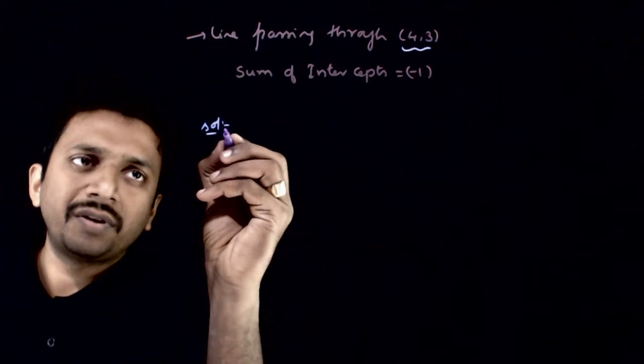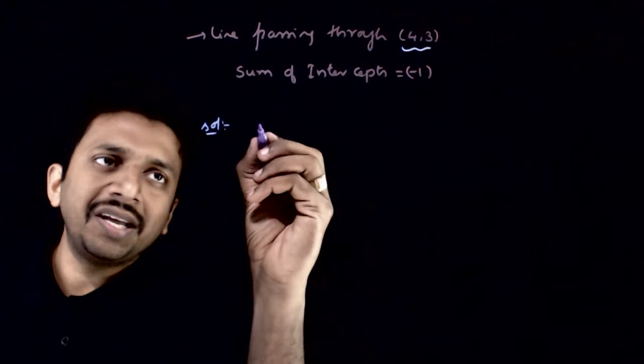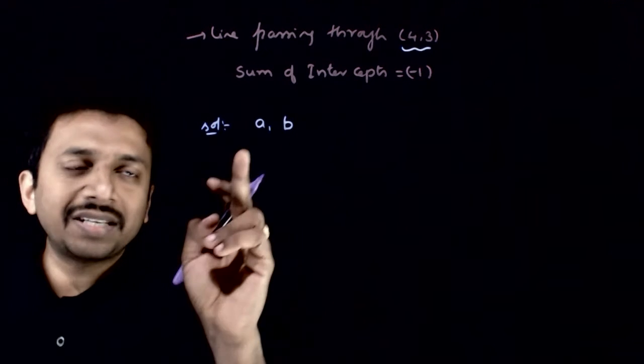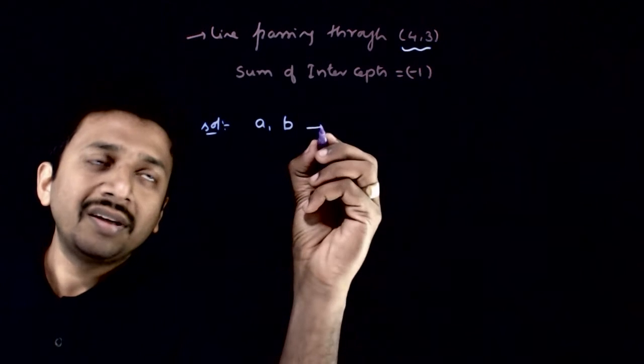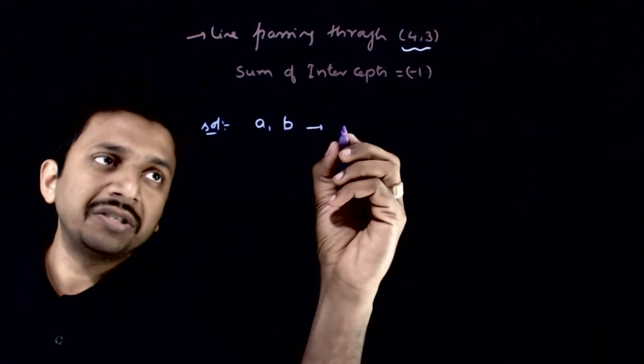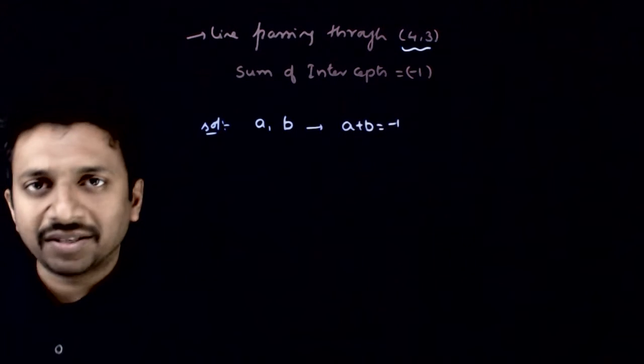Again, a very straightforward question. Let us assume that the intercepts are a, b. According to the second information, a plus b has to be equal to minus 1.